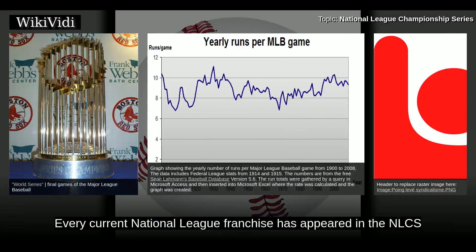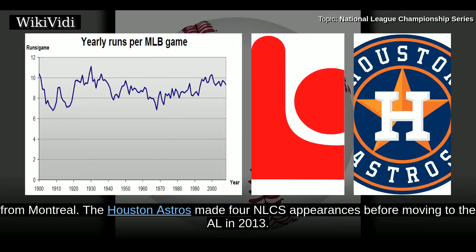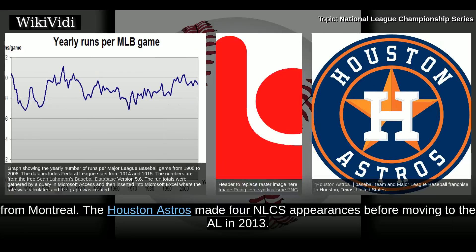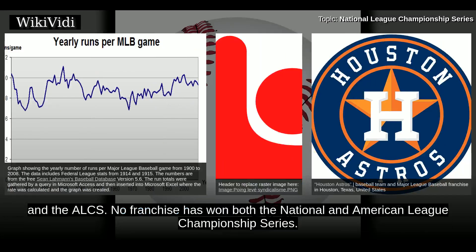Every current National League franchise has appeared in the NLCS at least once, except the Washington Nationals, who have not made the NLCS since relocating from Montreal. The Houston Astros made four NLCS appearances before moving to the AL in 2013. The Milwaukee Brewers and Houston Astros are the only franchises to play in both the NLCS and the ALCS. No franchise has won both the National and American League Championship Series.